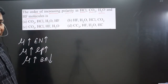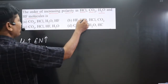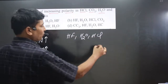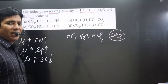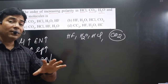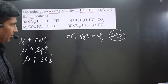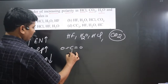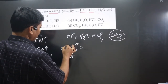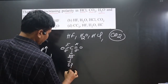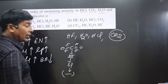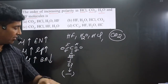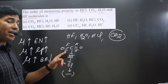Looking at CO2: carbon forms four bonds — in CO2 there are two sigma bonds and two pi bonds, giving SP hybridization. With SP hybridization, the geometry is linear. For a linear molecule where the two substituents are the same, the dipole moment will be 0.